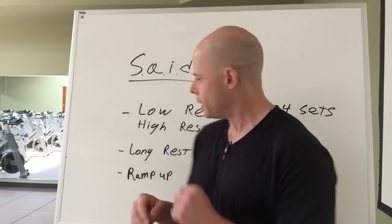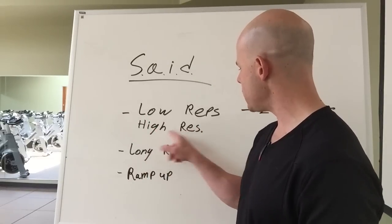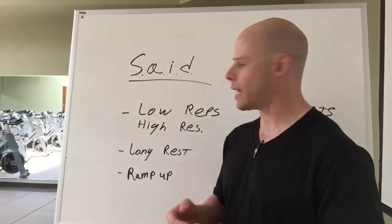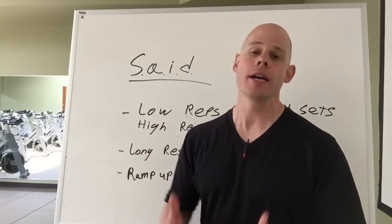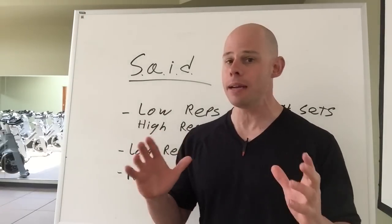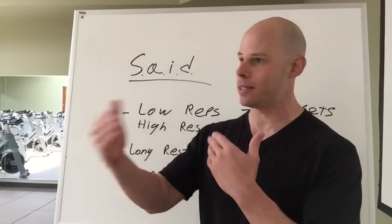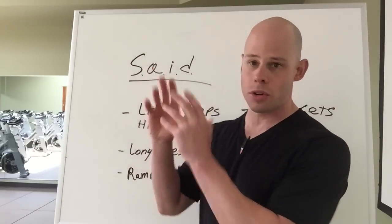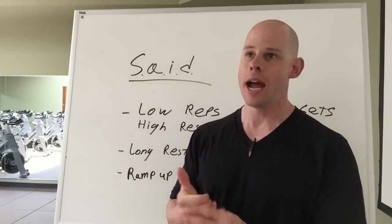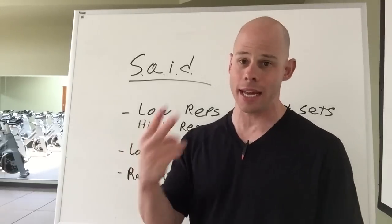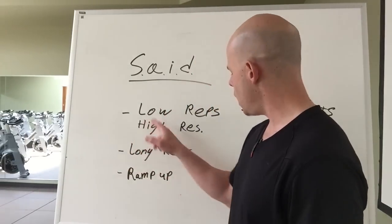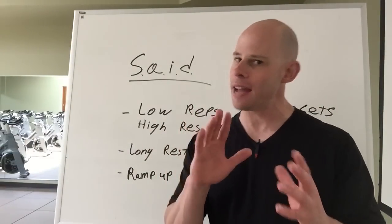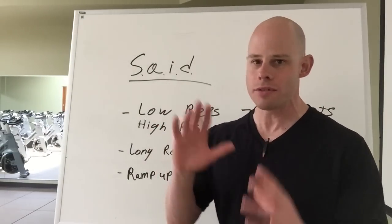Number one: we're looking for relatively low reps and high resistance. If you're not familiar with progressive calisthenics — how to make a push-up really hard — refer to things like Convict Conditioning. You can take any basic bodyweight exercise and adjust it just like adding weight to a barbell or dumbbell, going from easy to very hard. I was doing push-up variations today and was basically swaying to get three reps. High resistance means low reps, usually around three to five.